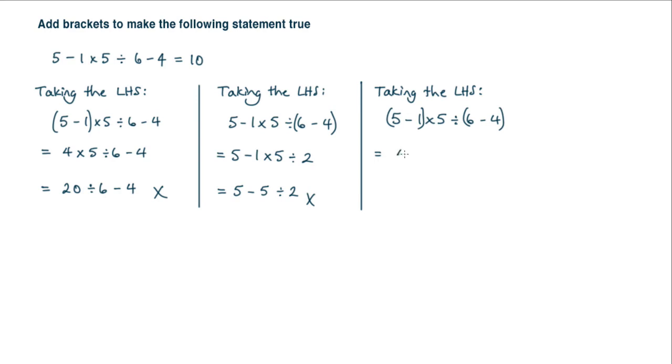Now this bracket I'll get 4. I got multiplied by 5 divided by, I'm going to get a 2 here. 4 multiplied by 5 is 20. I'm dividing that by the 2 and that equals 10. That is the correct answer. So therefore (5 minus 1) multiplied by 5 divided by (6 minus 4) is equal to 10.